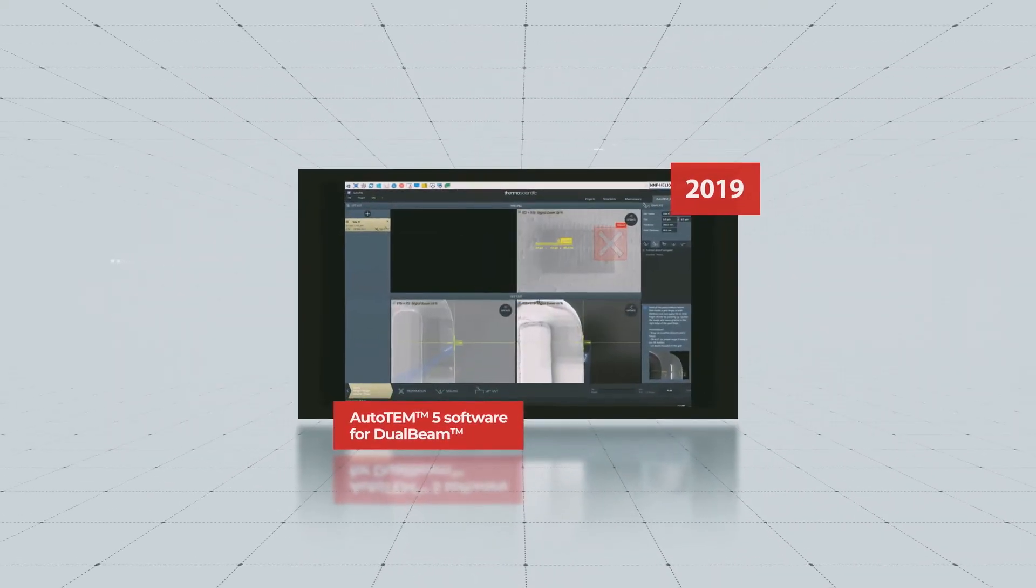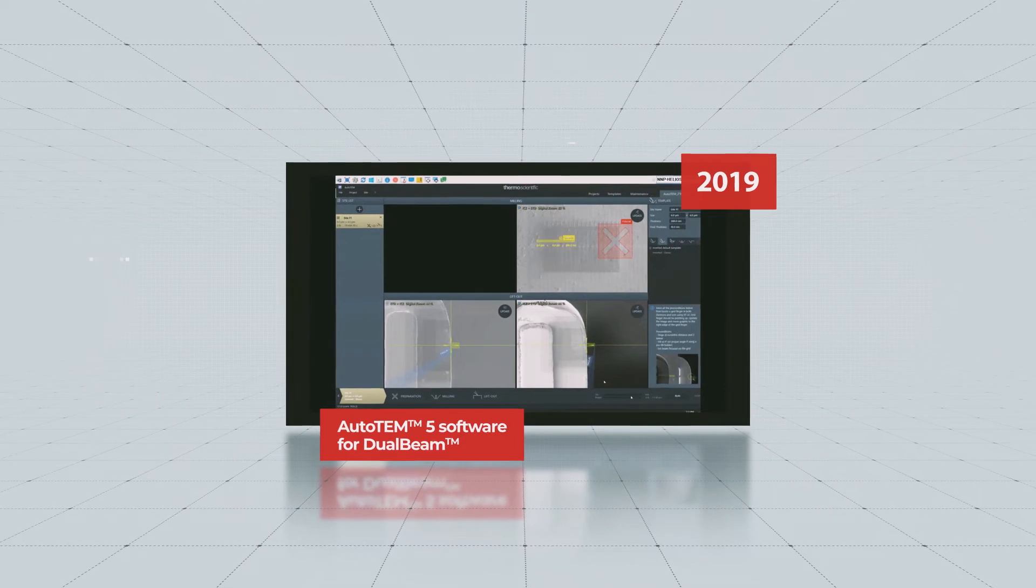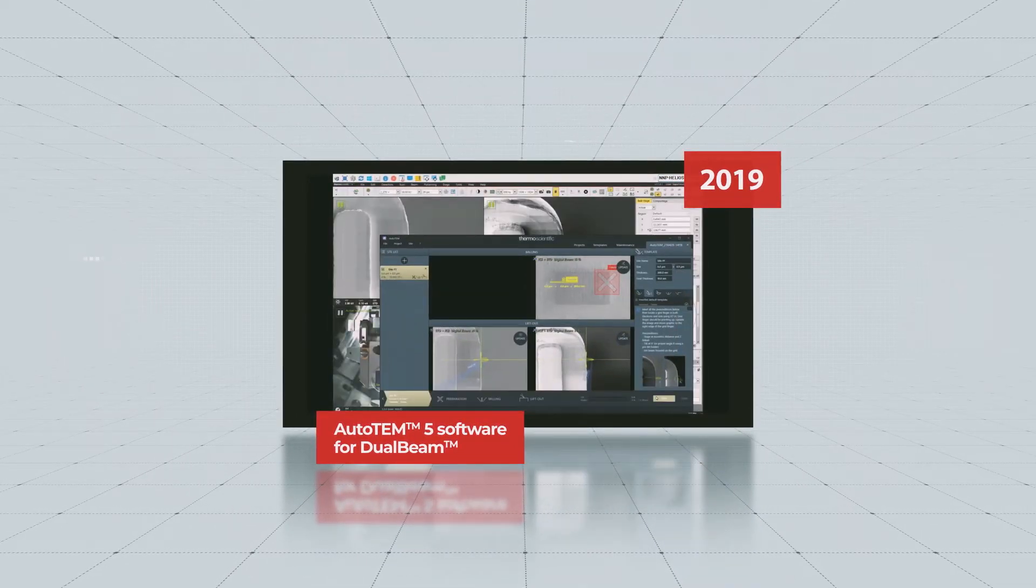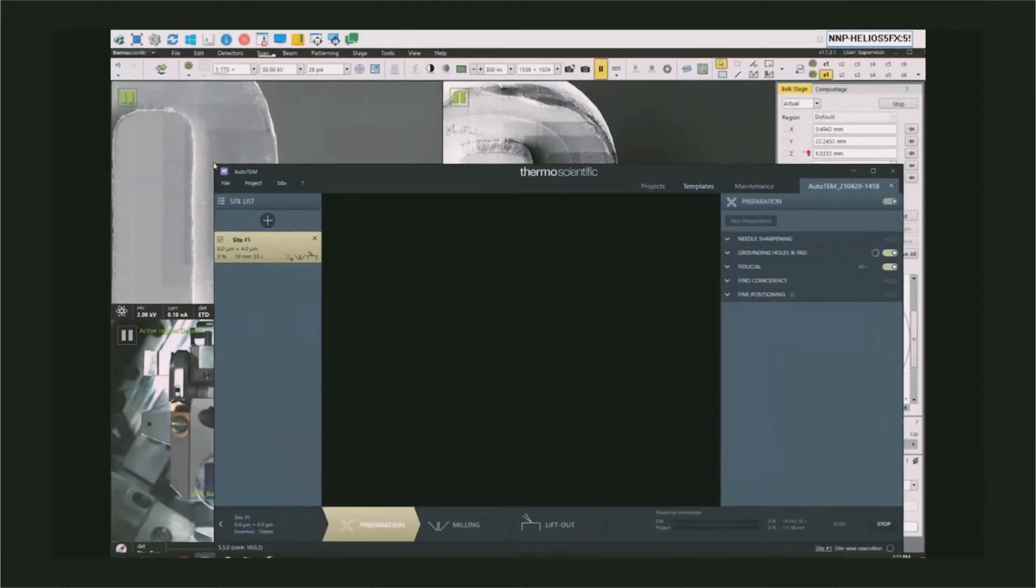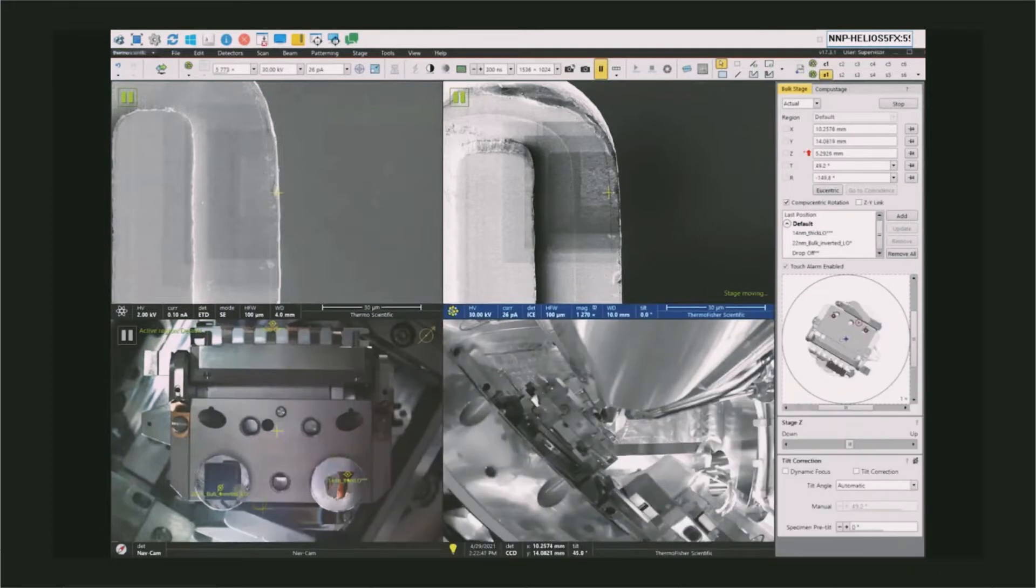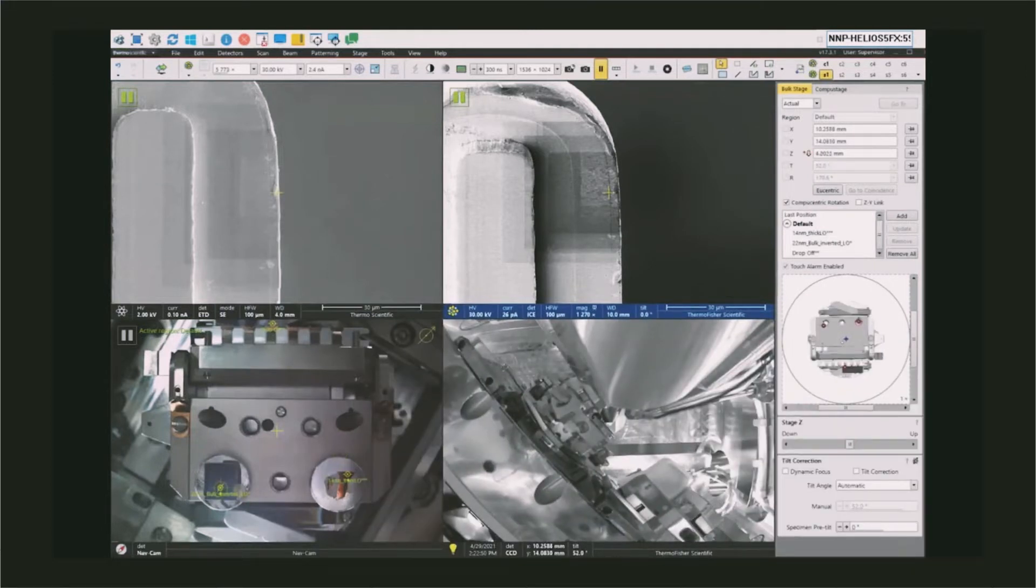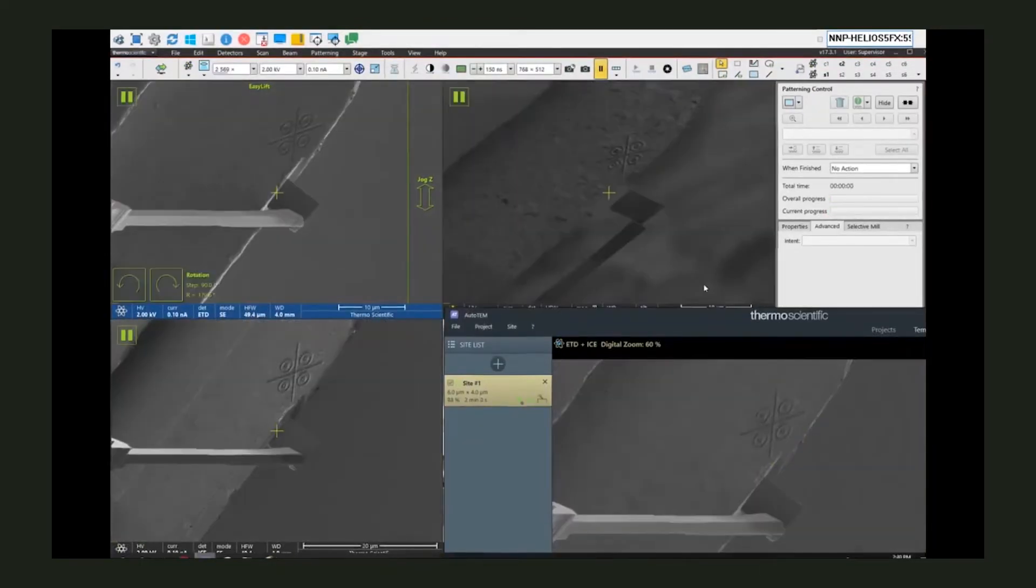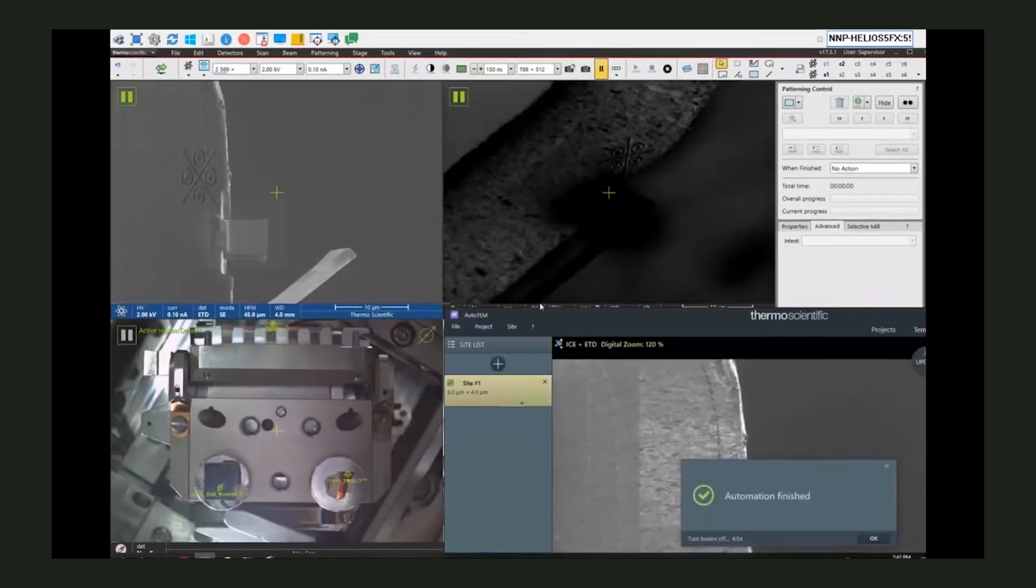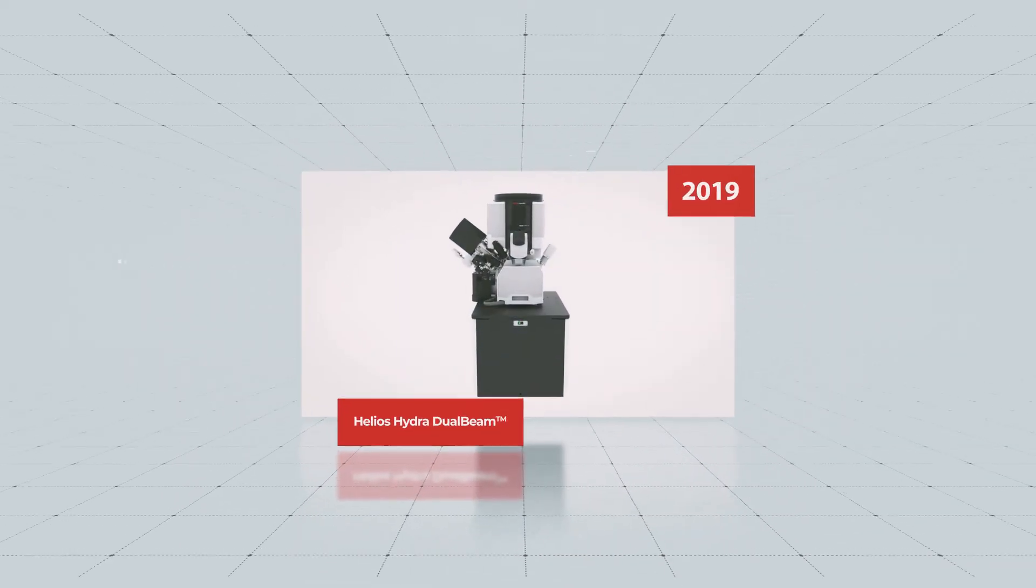In 2019, AutoTEM 5 revolutionized automated sample preparation for users of all skill levels. It was the first time fully automated sample preparation, including in-situ lift-out with the EZ-LIFT manipulator, was commercially available on the Helios dual beam for all materials. Now, anyone, not just the highly skilled operators of yesteryear, can reliably produce high-quality, ultra-thin TEM samples on a dual beam.